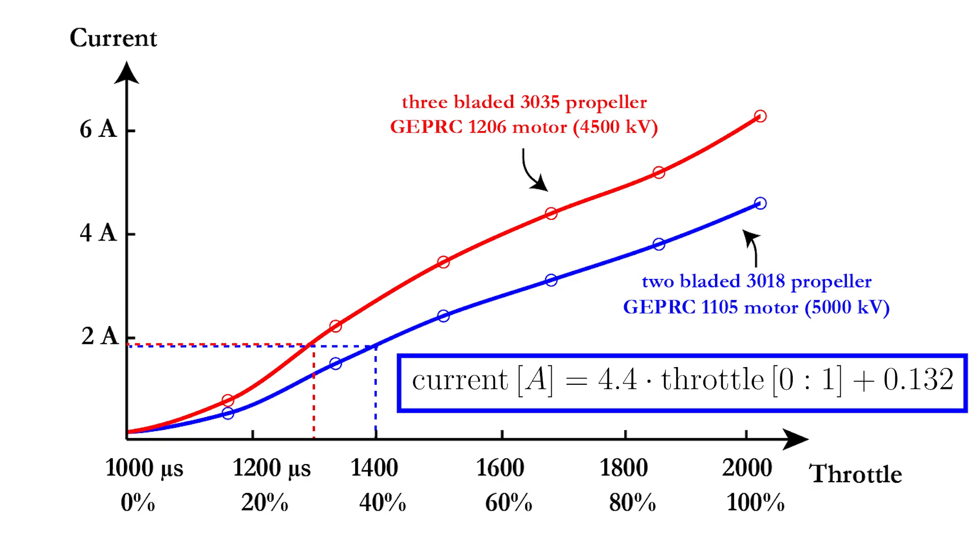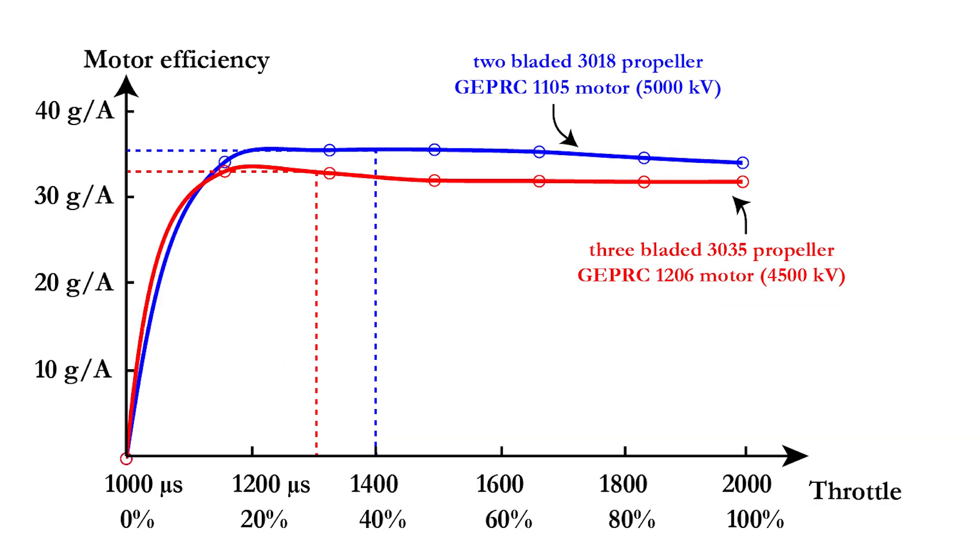But in essence, the current is more or less 4 times the throttle value between 0 and 1, meaning that the consumed current at full throttle is around 4 amps per motor. Dividing the thrust by the current at each point gives you the efficiency of the motor. Notice that the motor efficiency for a 2-bladed propeller is higher than for the 3-bladed propeller, meaning that your flight time increases when using a 2-bladed prop.